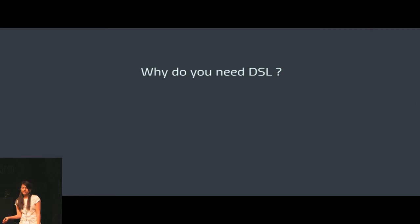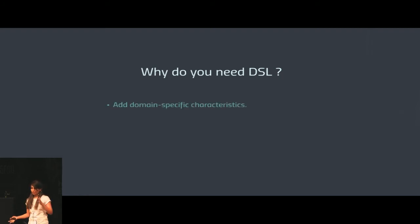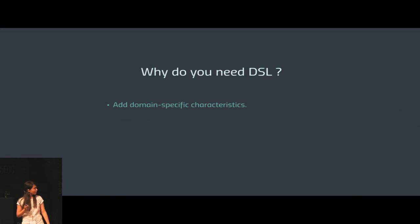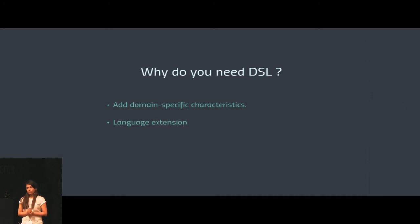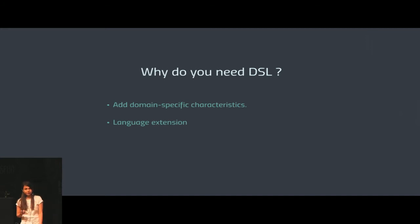Why would you need a DSL? You can have a domain specific language with domain specific features, like something we saw in the first example. You can also do language extension by adding features to an existing language that it does not support out of the box — like adding macros to JavaScript. That is what we intend to do with Lispy Script. You could also do code optimization to make the code compile faster.